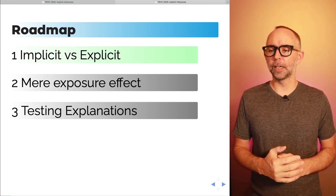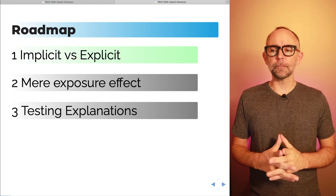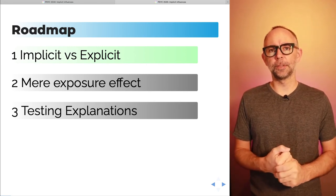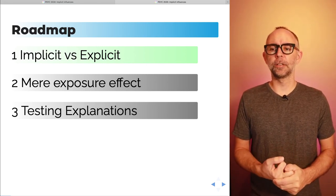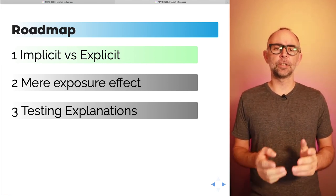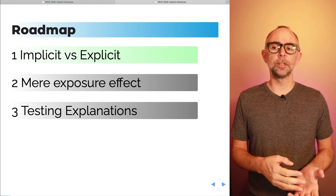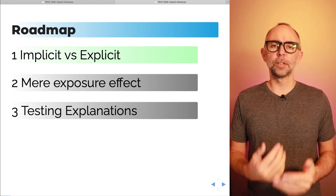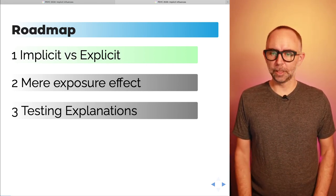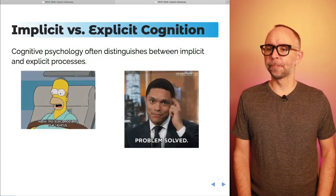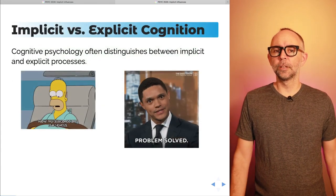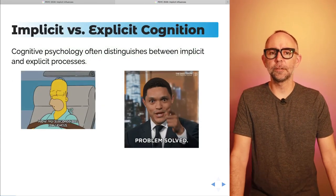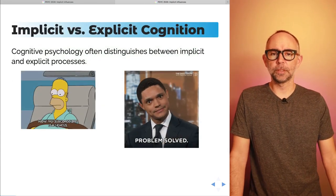Just as a heads up, there are lots of examples of implicit influences in cognition, and I've chosen the Mere Exposure Effect to dive into those details. So let's look at this distinction: implicit versus explicit cognition.